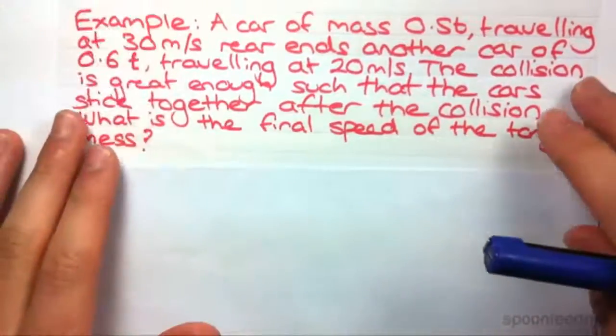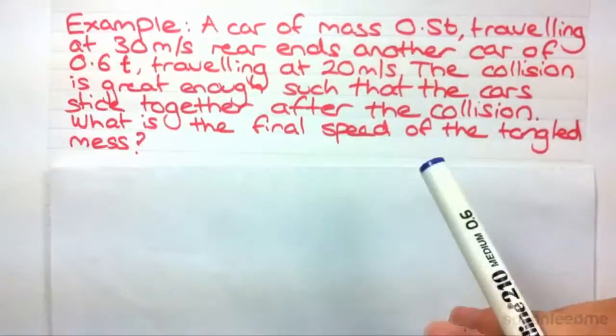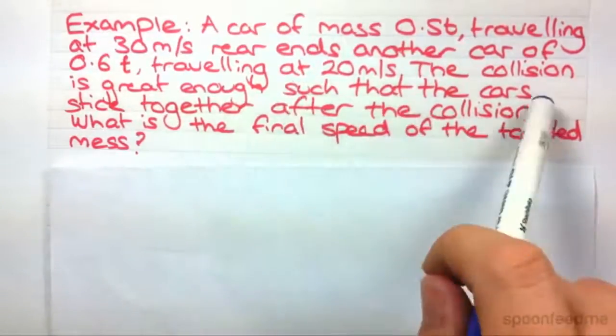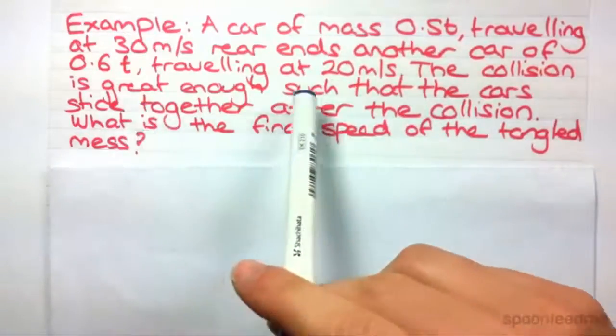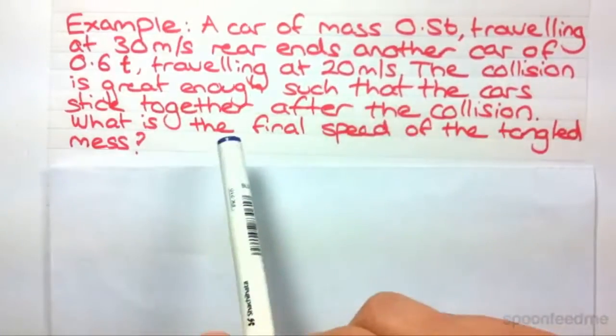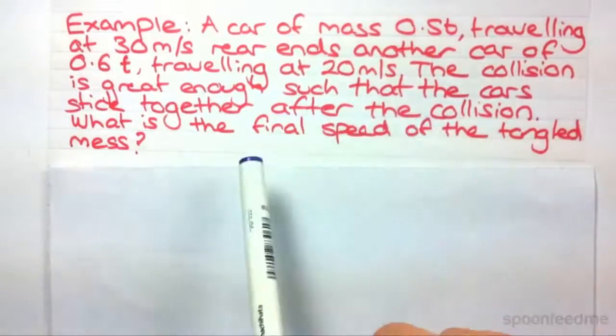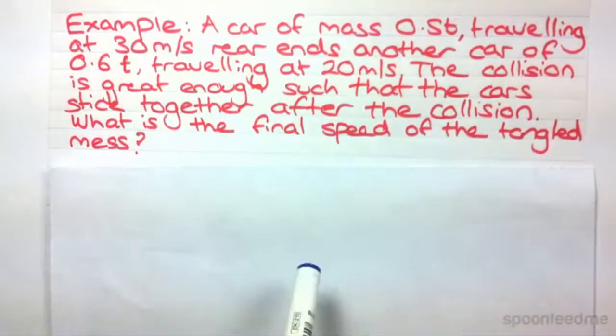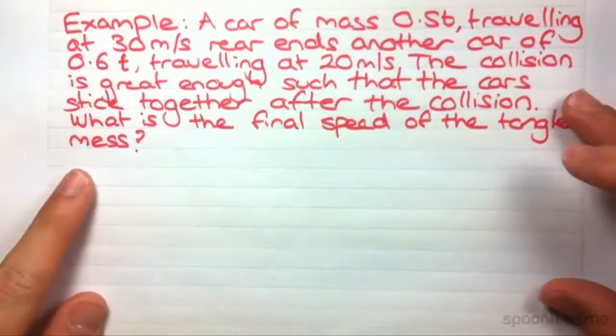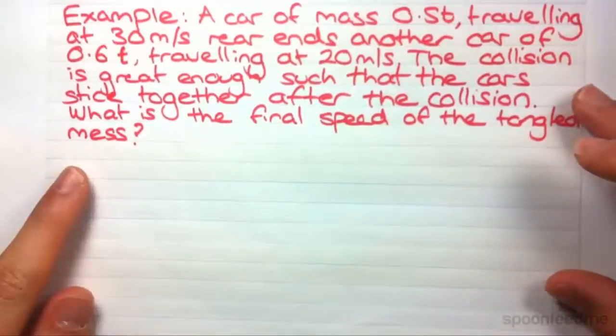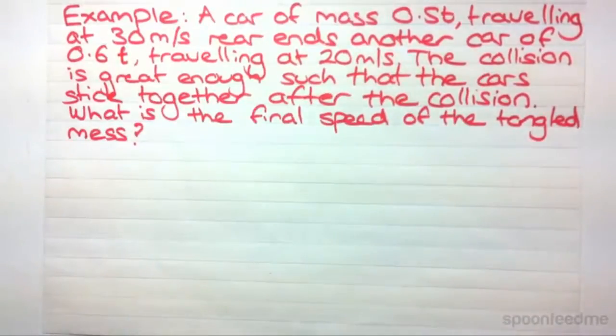A car of mass 0.5 tons traveling at 30 meters per second rear ends another car of 0.6 tons traveling at 20 meters per second. The collision is great enough such that cars stick together after the collision. What is the final speed of the tangled mass? Now since the one car rear ends the other, we can assume they're going in the same direction, so we don't really need to worry about positive and negative velocity vectors.